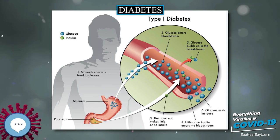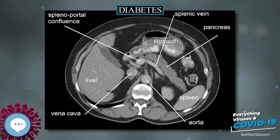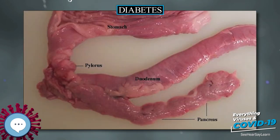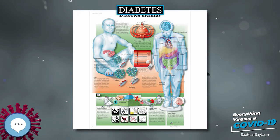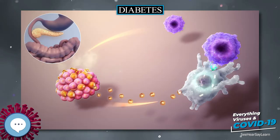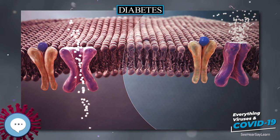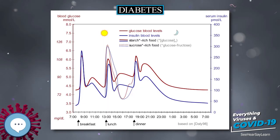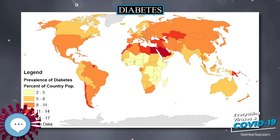The WHO estimates that diabetes resulted in 1.5 million deaths in 2012, making it the eighth leading cause of death. However, another 2.2 million deaths worldwide were attributable to high blood glucose and the increased risks of cardiovascular disease and other associated complications, such as kidney failure, which often lead to premature death and are often listed as the underlying cause on death certificates rather than diabetes. In 2017, the International Diabetes Federation estimated that diabetes resulted in 4.0 million deaths worldwide, using modeling to estimate the total number of deaths that could be directly or indirectly attributed to diabetes.